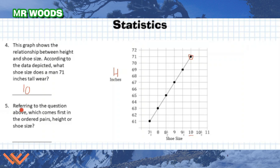Number five. Referring to the question above right here, which comes first in the ordered pairs height or shoe size? So remember if we're looking at a graph, our coordinate plane, this is my y-axis up here. And this is my x-axis over here. And typically we write it as x and y. So here I can put it as shoe size, which is my x-axis right here. And then height, comma, h, or number of inches.